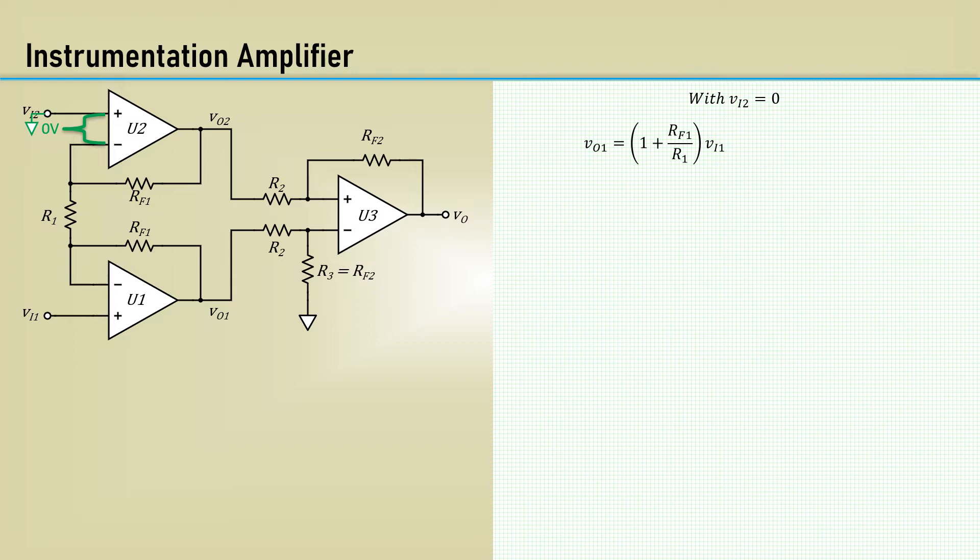Because there is a virtual short circuit between the V plus and the V minus inputs of U1, the voltage at the lower node of R1 is VI1. U2 then operates as an inverting amplifier. Its output voltage is given by the inverting amplifier output voltage formula. Subtracting VO2 from VO1 gives us this and simplifies to this expression. U3 operates as a true difference amplifier, and its output voltage, VO, is given here.